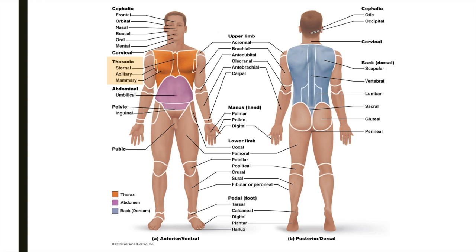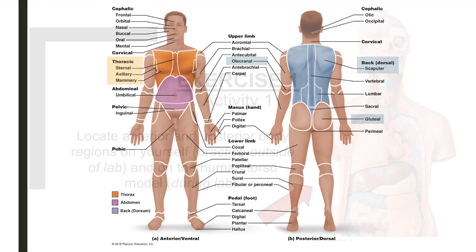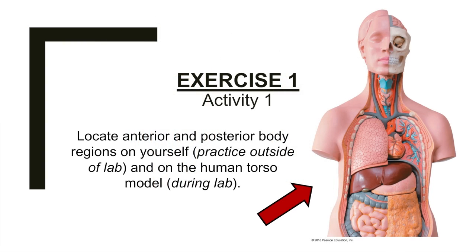The number of anatomical regions may seem overwhelming at first, but as you review regional anatomy, you'll be reminded of the many bones and muscles found in those locations. The scapula is found within the scapular region. The olecranon, or elbow, is found within the olecranal region, and the gluteus maximus is found within the gluteal region. For activity 1, you'll practice locating these regions on yourself and on the human torso models.